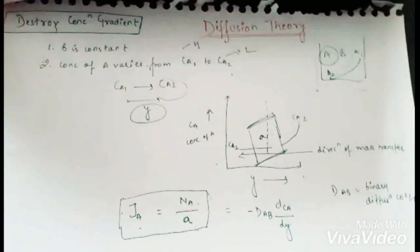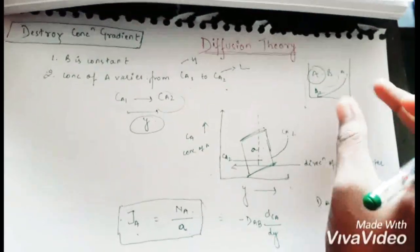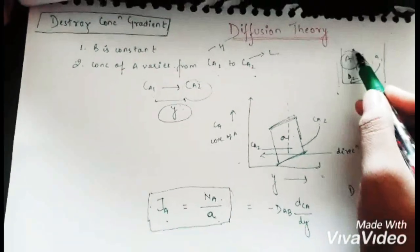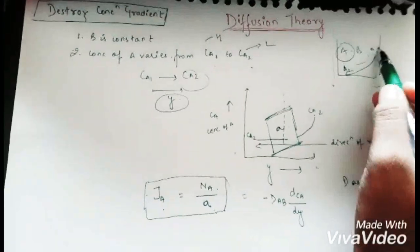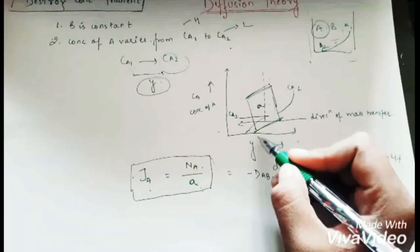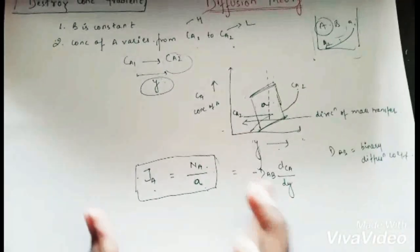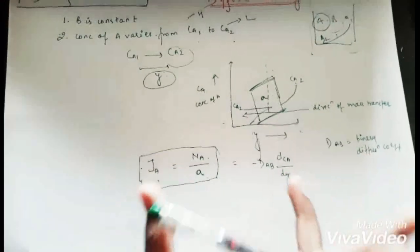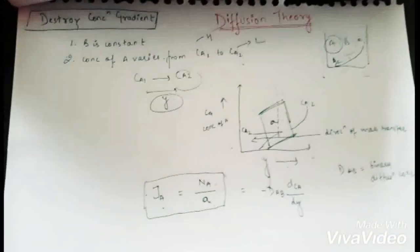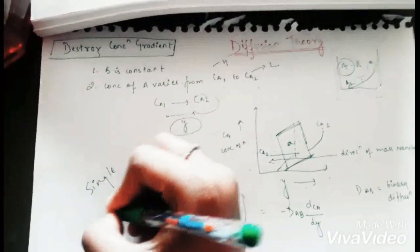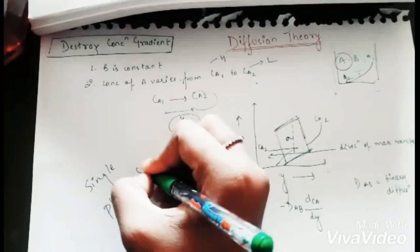This is our total diffusion theory: in a mixture containing A and B, we consider one component to be constant while the other moves from higher concentration Ca1 to lower concentration Ca2, across area A and over distance y. The total mass transfer is calculated with this formula. Diffusion theory is applicable for single phase systems.